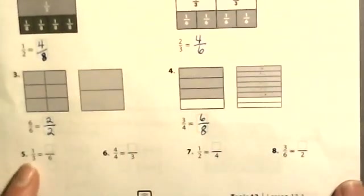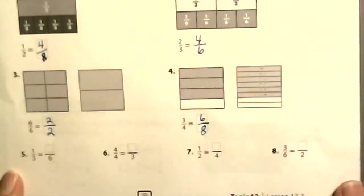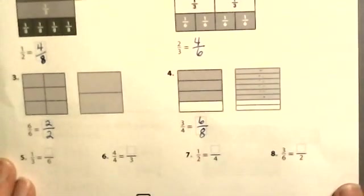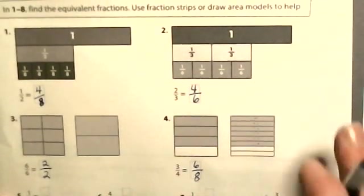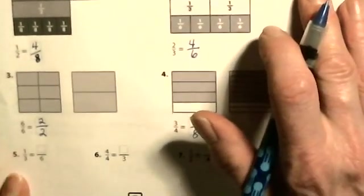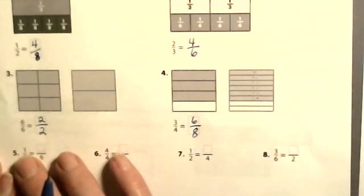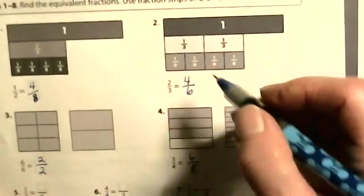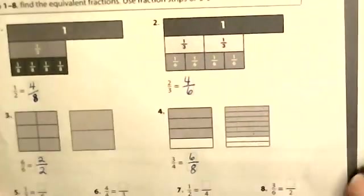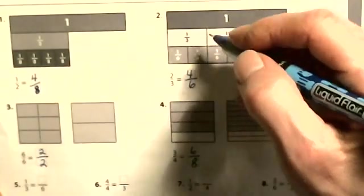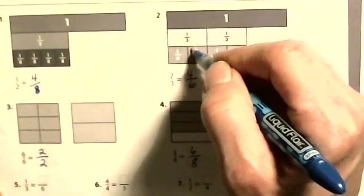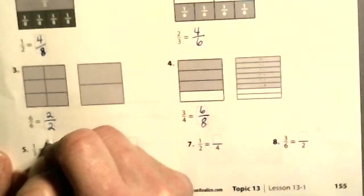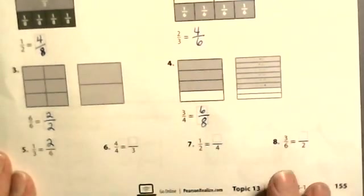Now I have thirds and sixths. Did I have thirds and sixths anywhere in the examples up here? I did, so I can use that information. One-third is equal to how many sixths? One-third is equal to two-sixths.